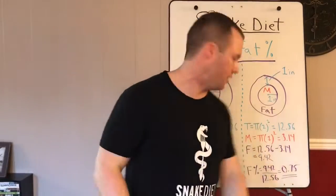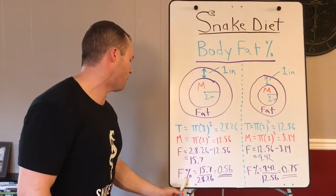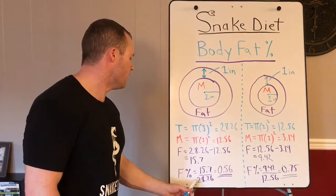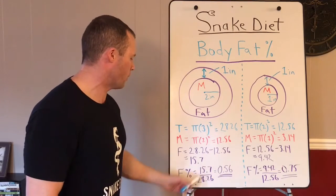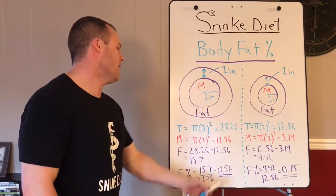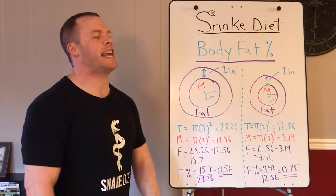Now to figure out the fat percentage you go 15.7 divided by 28.26 for the total area. So we got fat divided by total area equals 0.56, fifty-six percent body fat for the big guy.